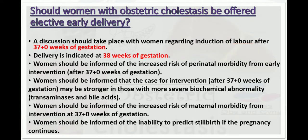Regarding elective early birth, a discussion should take place with the woman regarding induction of labour after 37 plus weeks of gestation, and delivery is indicated at 38 weeks. Women should be informed of the increased risk of perinatal morbidity from early intervention after 37 plus weeks, and that the case for intervention may be stronger in those with more severe biochemical abnormalities such as raised transaminases and bile acids. Women should also be informed of the increased inability to predict stillbirth if the pregnancy continues.